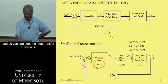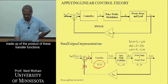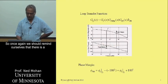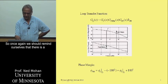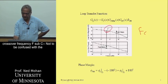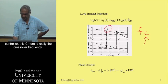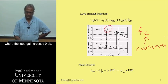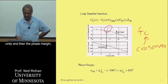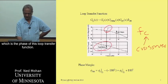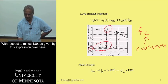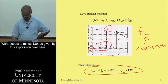The loop transfer function is made up of the product of these transfer functions. We should remind ourselves that there's a crossover frequency F sub C — not to be confused with the controller — where the loop gain crosses 0 dB, or unity. The phase margin is the phase of this loop transfer function with respect to minus 180 degrees, given by this expression.